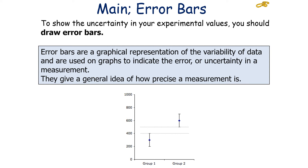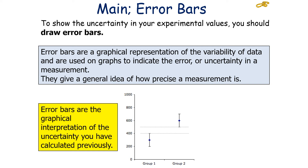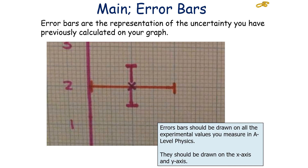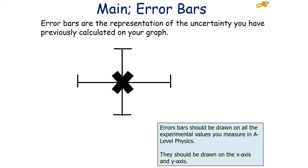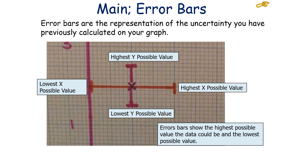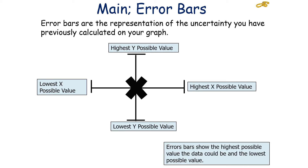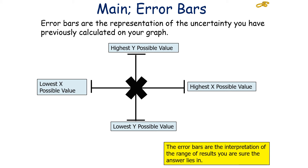We can show uncertainty in experimental values by drawing error bars. Error bars are a graphical representation of the variability of data and are used on graphs to indicate the error or absolute uncertainty in a measurement, giving a general idea of how precise the measurement is. Error bars are a graphical interpretation of the absolute uncertainty you've calculated previously. Error bars should be drawn on all experimental values in A-level physics, drawn above the x-axis and the y-axis, as shown in the diagram. They link to the range of possible values that your measurement could actually be — showing the highest and lowest possible values the data could take.